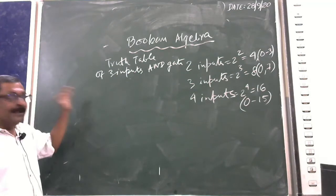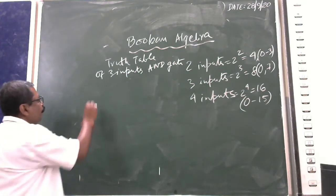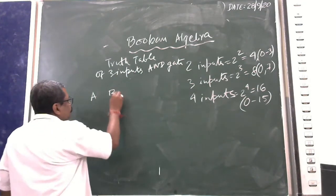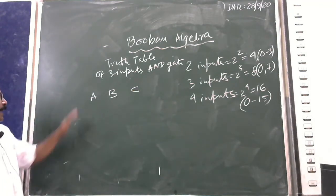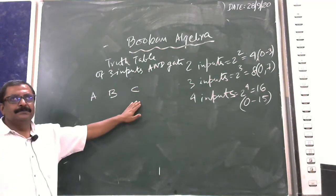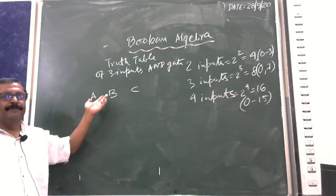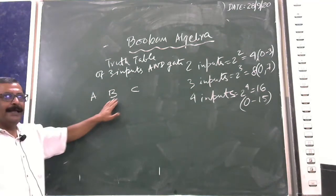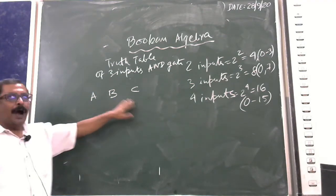For 3 inputs named A, B, C — or other parameter names like X, Y, Z — the same approach applies.